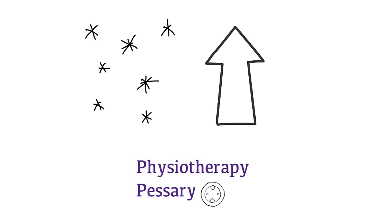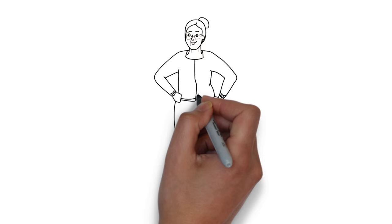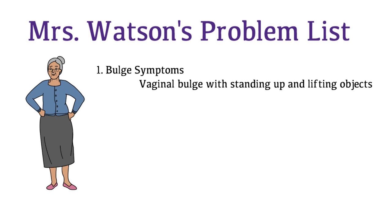So which symptoms does Mrs. Watson have? Let's make a list of her problems. 1. Bulge symptoms. She has a vaginal bulge with standing up and lifting objects.